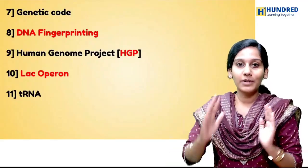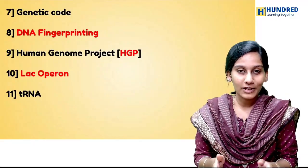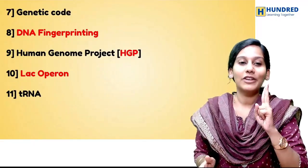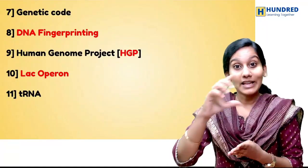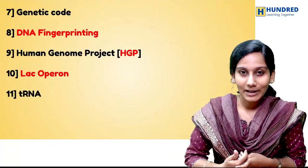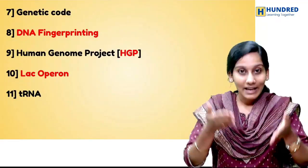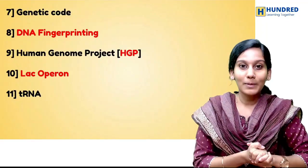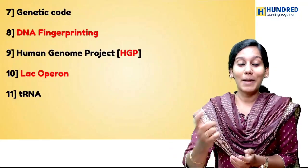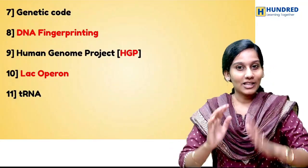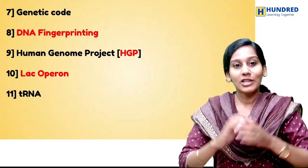The next part of the chapter: transcription and translation. The genetic code, DNA fingerprinting, and the Human Genome Project — methodologies and features — are all important. The lac operon is super important along with the diagram. And tRNA — in the 2023 public exam, a 5-mark question on tRNA was asked under its other name, 'adapter molecule.' So knowing the tRNA structure along with the diagram can definitely get you 5 marks.